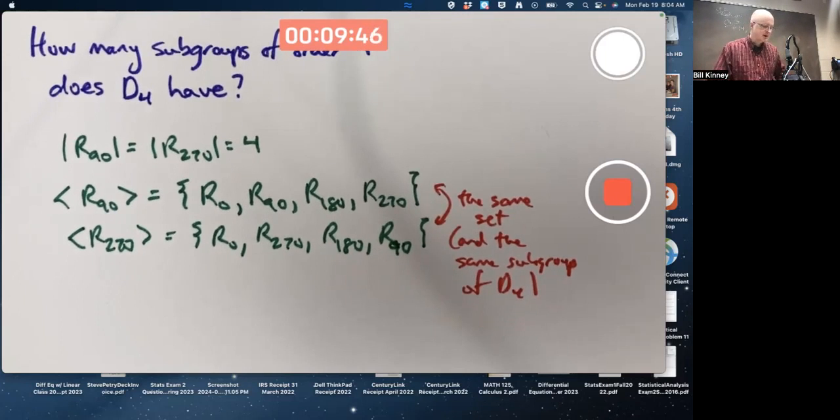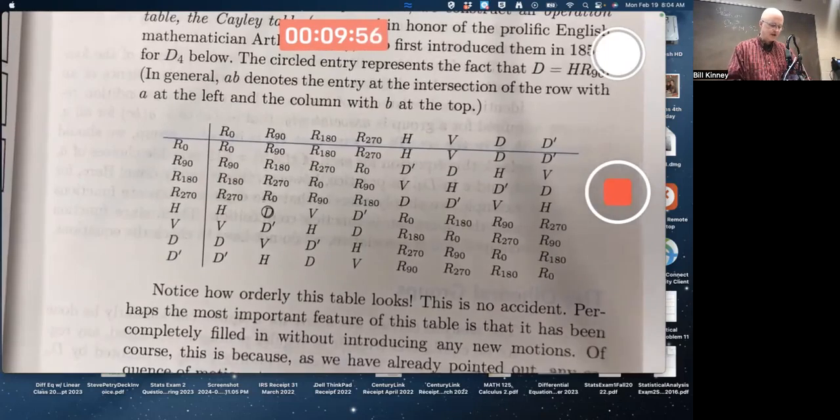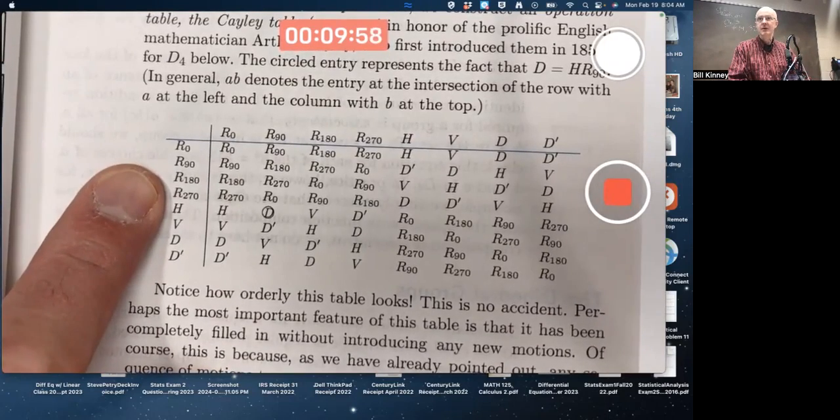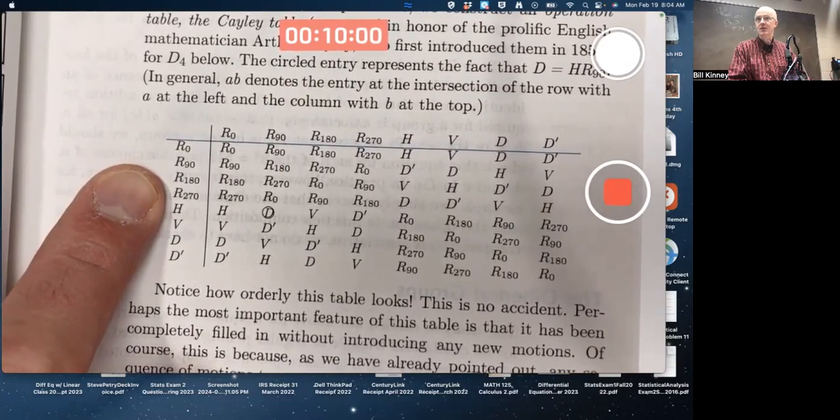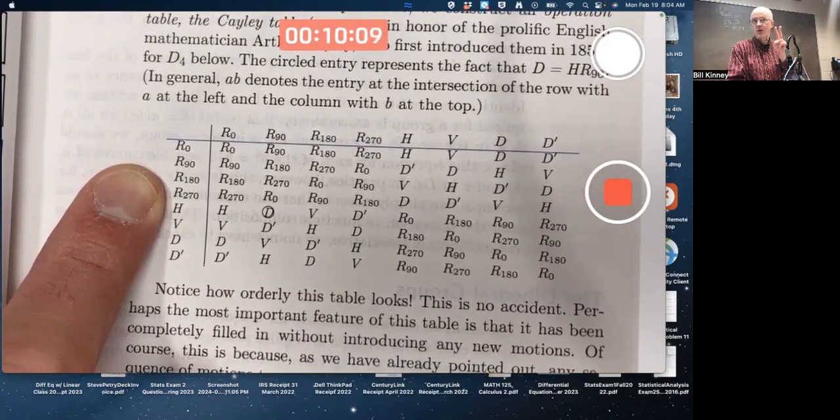So you've got to do some experimentation, perhaps, looking at the Cayley table. We just looked at what's really the cyclic subgroup of all rotations, is the one generated by R90 and R270. R180 has order 2. It generates a cyclic subgroup of order 2, not order 4.